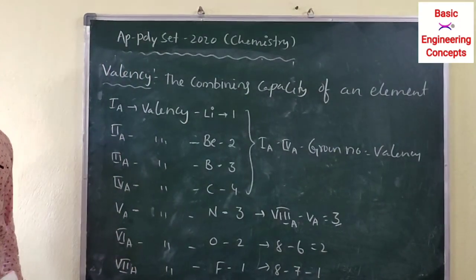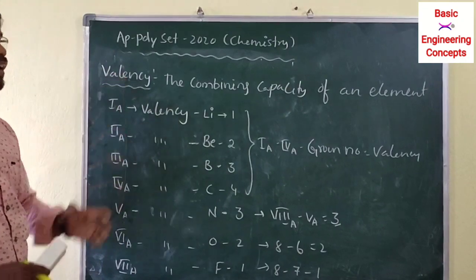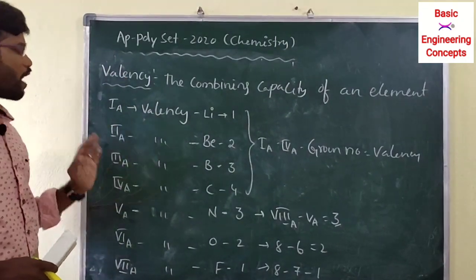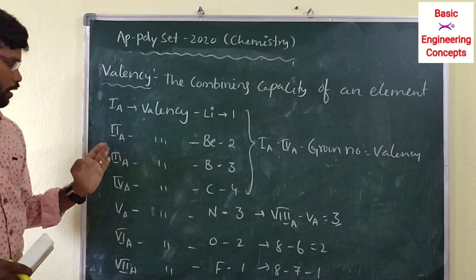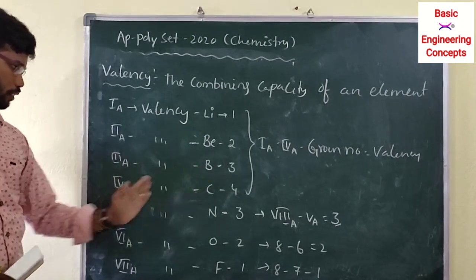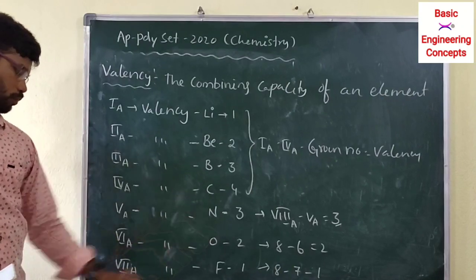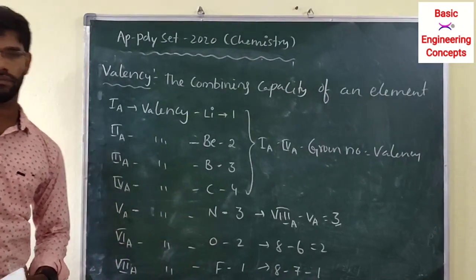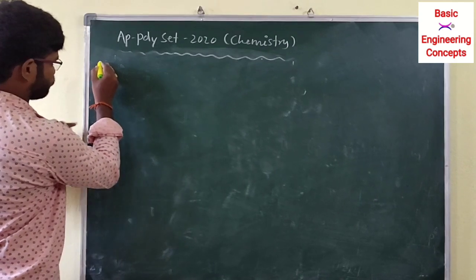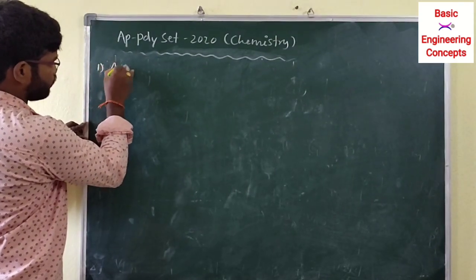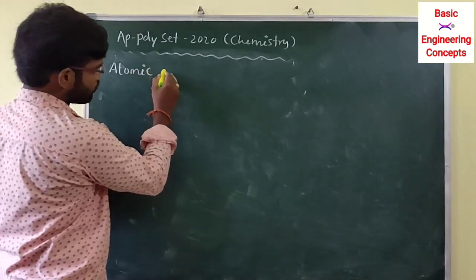The combining capacity of an element is called valency. To summarize: Group 2 valency is two, Group 3 is three, Group 4 is four, Group 5 is three, Group 6 is two, Group 7 is one.